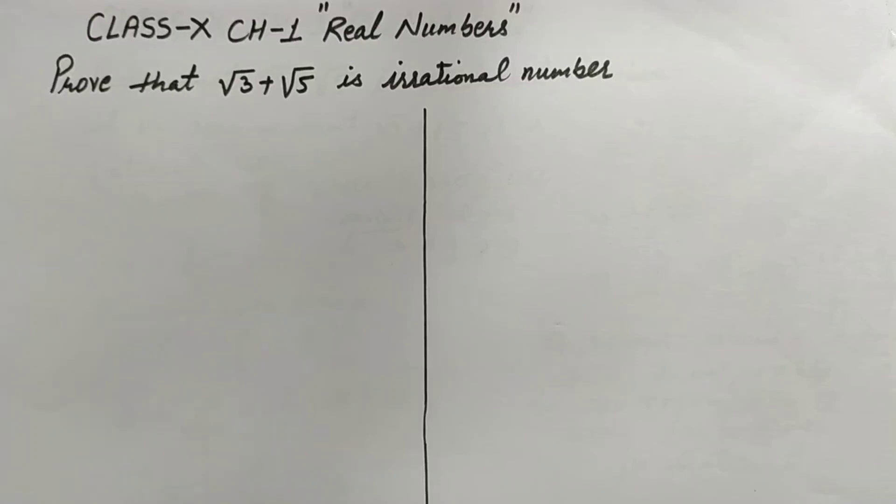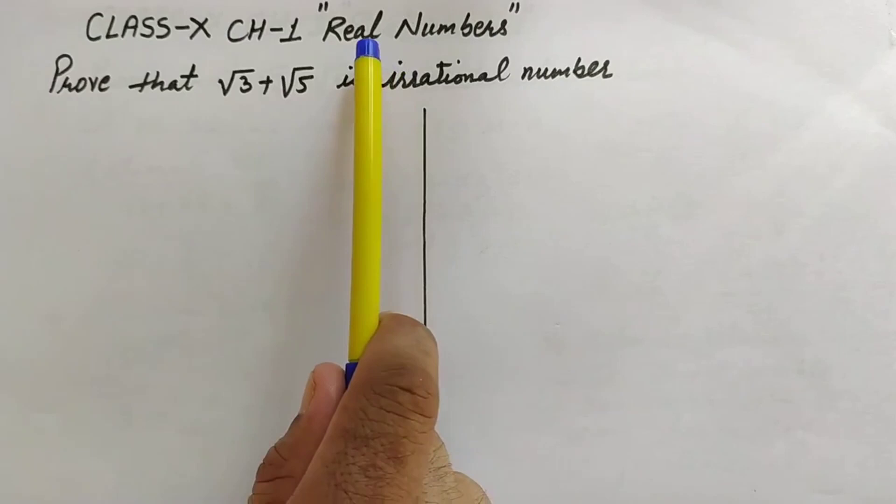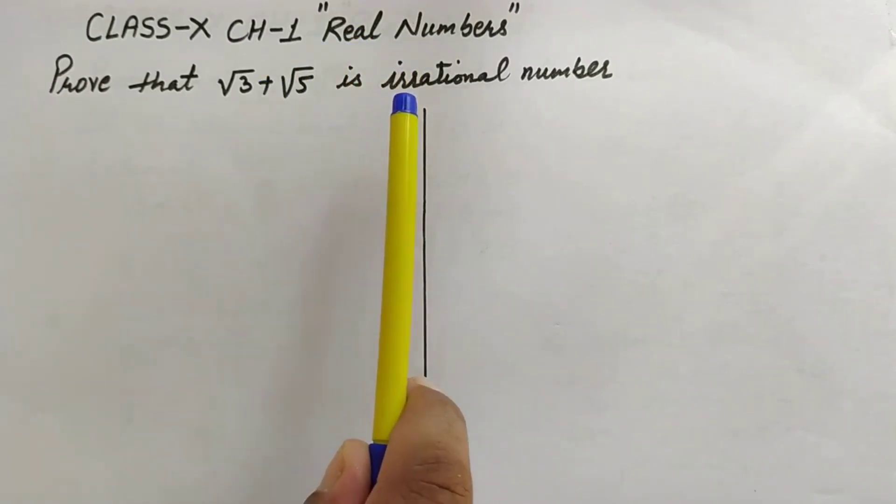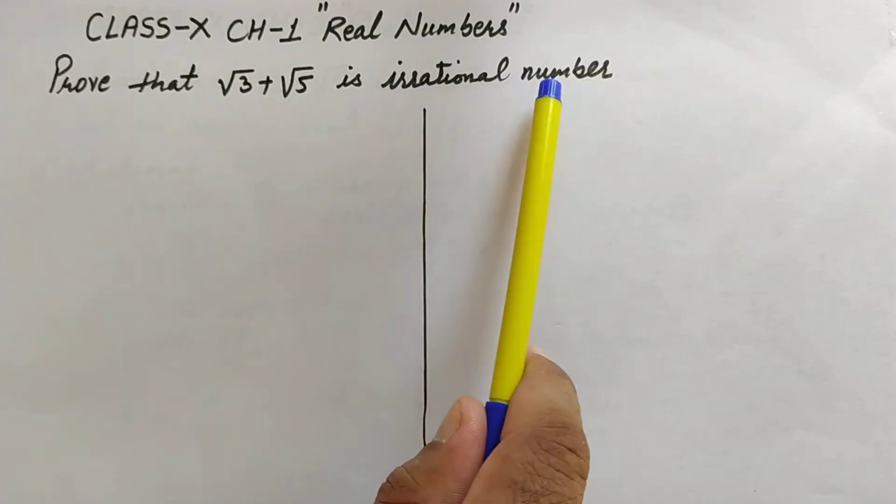Hello dear students, welcome to this YouTube channel. Let's do this question from Class 10, Chapter 1: Real Numbers. The question is: prove that √3 + √5 is an irrational number. Real numbers are the combination of rational numbers and irrational numbers.